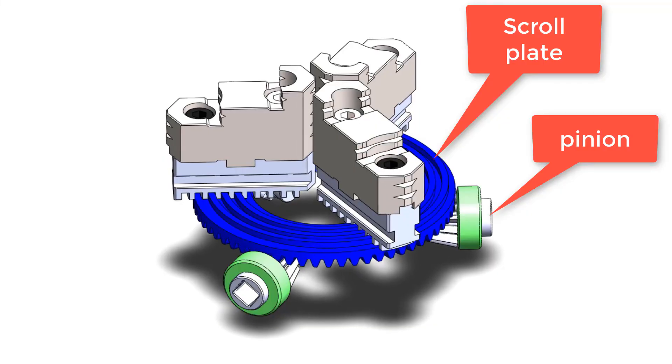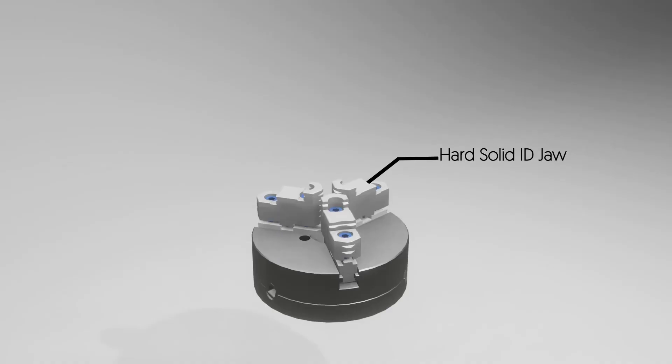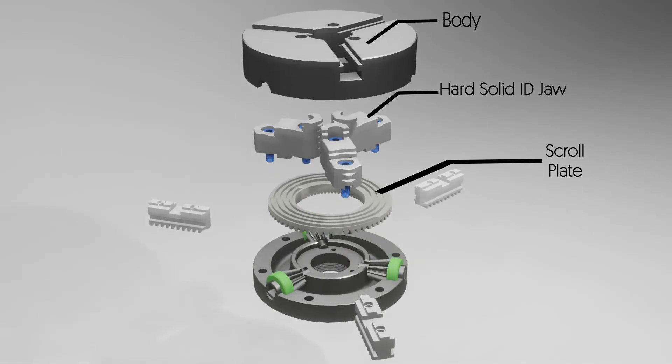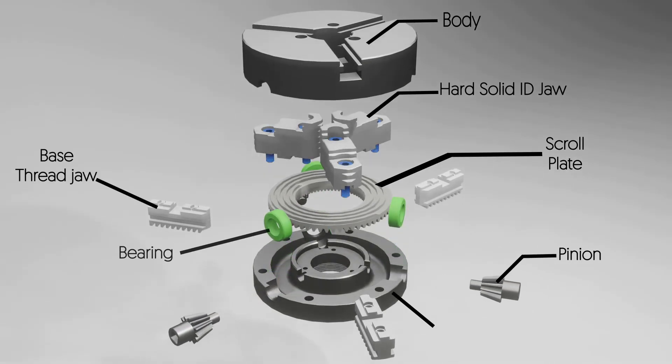Three jaw chuck is normally used for cylindrical shapes and hexagon shapes. If you want to learn more about its advantages and disadvantages, check out the blog link in the description.